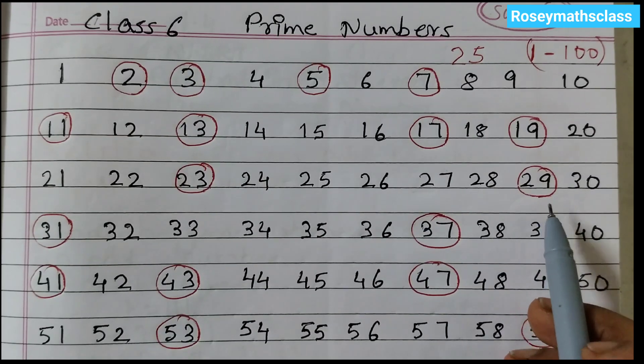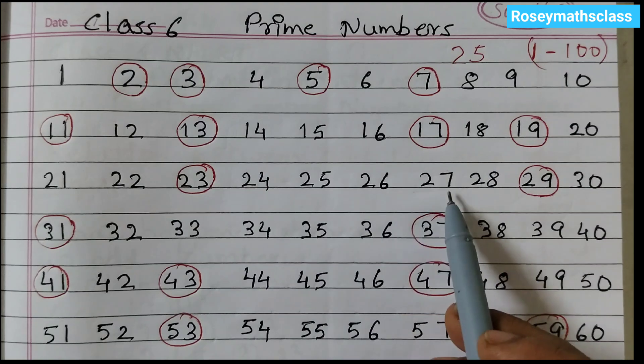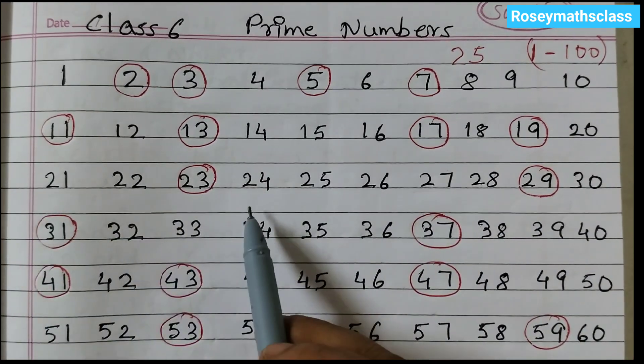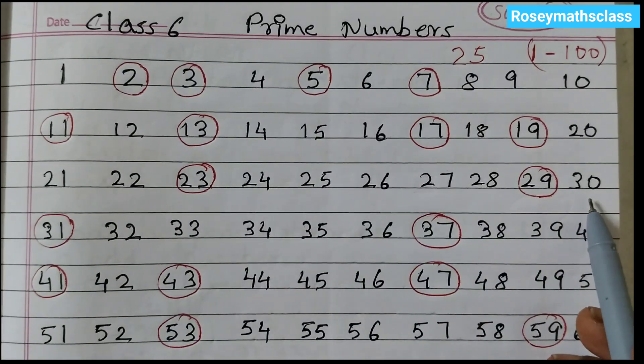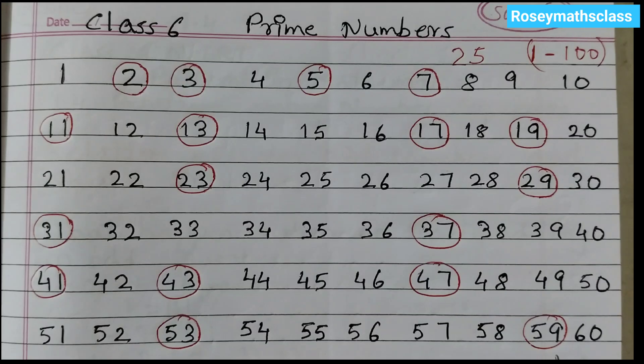And how many composite numbers? 1, 2, 3, 4, 5, 6, 7, 8. So 21, 22, 24, 25, 26, 27, 28 and 30. These are the 8 composite numbers from 21 to 30.